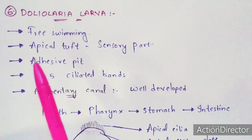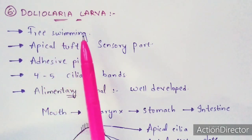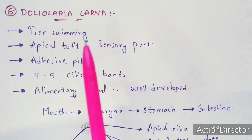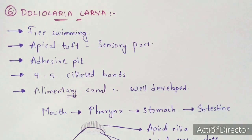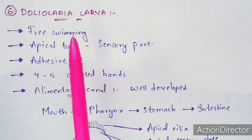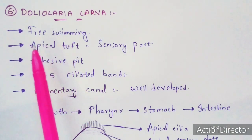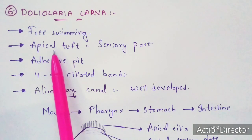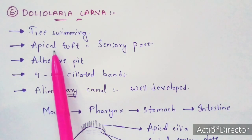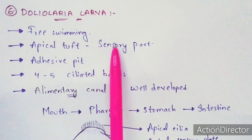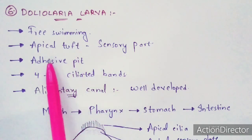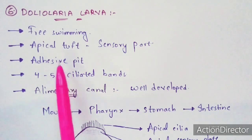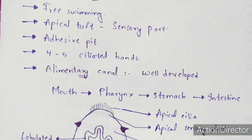Coming to the sixth form of larva — the doliolaria larva — this is the final larval stage, after which metamorphosis occurs and it becomes adult. It exhibits the property of free swimming. It consists of an apical tuft, also called the apical sensory plate, which is a sensory part. It also consists of an adhesive pit, and four to five ciliated bands are present.